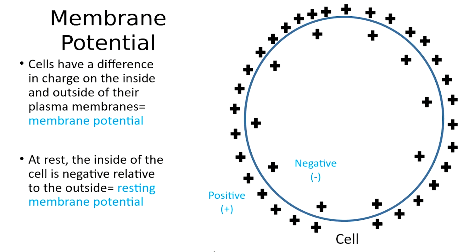This membrane potential — this difference in charge on the two sides of the membrane — becomes particularly important with skeletal muscle cells that are contracting, and also with nerve cells that are conducting electrical signals. That's why we're going into this now, right before we go into the muscular system, because the membrane potential is involved in the contraction of skeletal muscles.